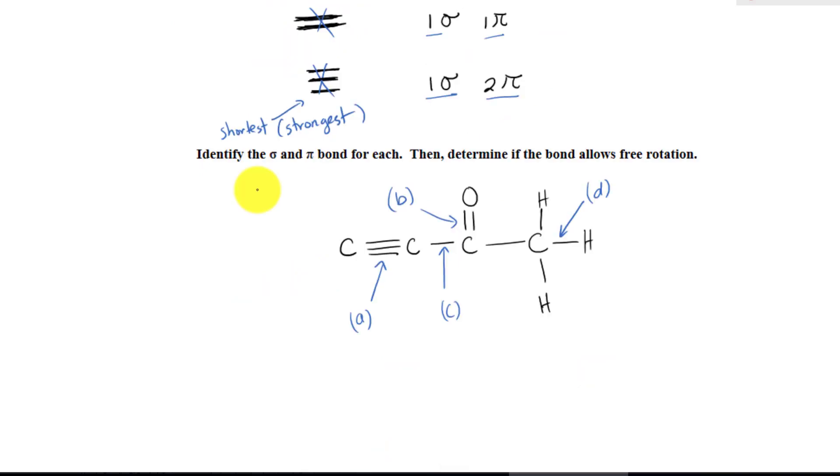Now let's apply what we have learned about the three types of bonds to understand more about this compound. The first thing we have to do is identify the number of sigma and pi bonds for each. Then label A, B, C, D. Then lastly, determine if the bond allows free rotation.